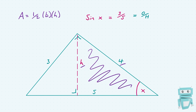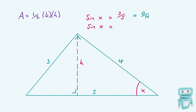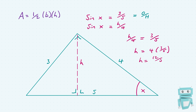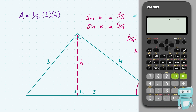Looking at this smaller triangle, sine x equals the opposite over the hypotenuse, which is h over 4. This is indeed a right angle triangle. So we have two expressions for sine x: sine x equals 3 over 5, and sine x equals h over 4. Setting them equal gives us h over 4 equals 3 over 5. Multiplying across by 4, h equals 4 times 3 fifths, which is 12 over 5. Plugging that into the calculator and converting to a decimal, h equals 2.4.